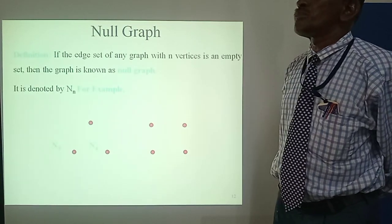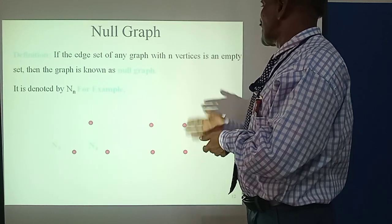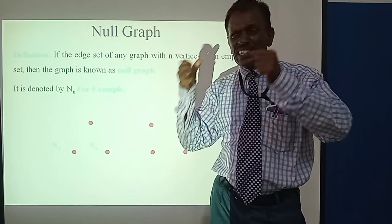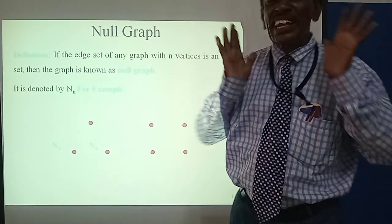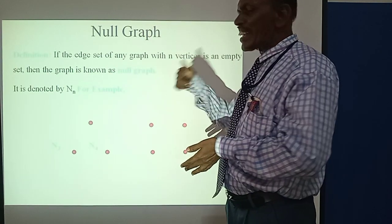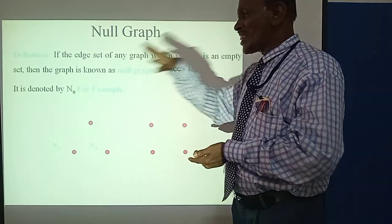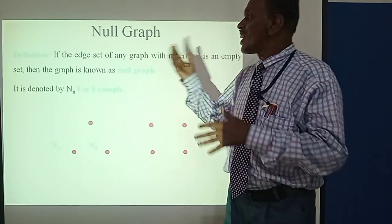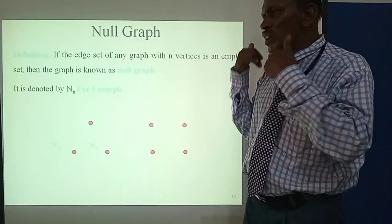Null Graph. A null graph has no vertices and no edges. The edge set is an empty set. A set is a collection of elements. If the edge set of any graph is an empty set, then the graph is known as a null graph. It is denoted by Kn. For example, V1, V2, V3, V4 with no edges is a null graph.